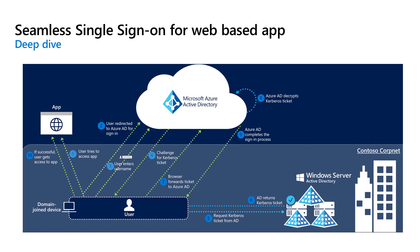We're going to look at two separate scenarios with Seamless SSO. The first one is sign-in to a web browser application; the second is sign-in using the native client. Let's say you're trying to sign in to Office 365 or a third-party SaaS app from a domain-joined computer — Windows Server Active Directory domain join. If the user is not already signed in, they're redirected to the Azure AD sign-in page and type in their username. Using JavaScript in the background, Azure Active Directory challenges the browser via a 401 unauthorized response to provide a Kerberos ticket. The browser requests a ticket from Active Directory for the Azure AD SSO ACC computer account, which represents Azure Active Directory in Windows Server Active Directory.